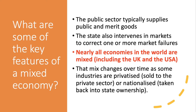The public sector typically supplies what we call public and merit goods. Public goods include things like national defence systems and flood defence systems, which the free market might not actually provide left to its own devices. Merit goods include things like a state-funded healthcare system, state education, and local authority housing. So the state is both a provider and also an intervener in markets. The state intervenes through fiscal policy and other types of regulations designed to correct for one or often multiple market failures.